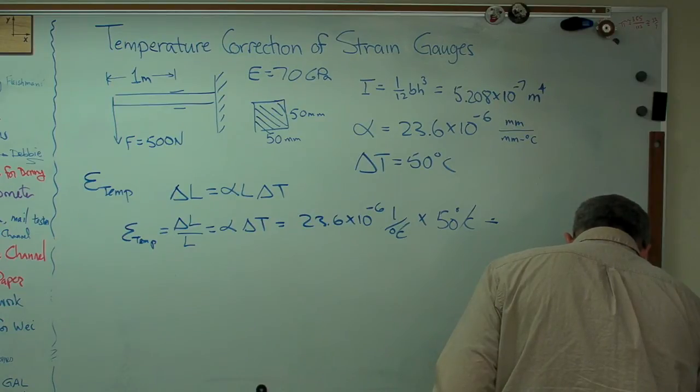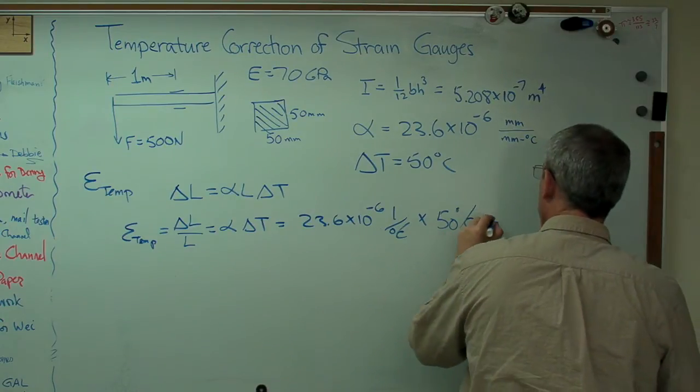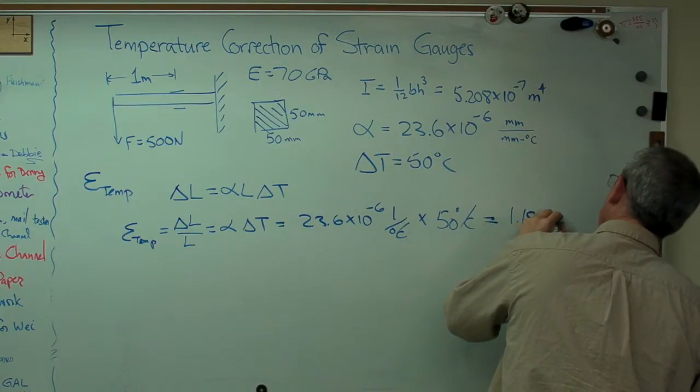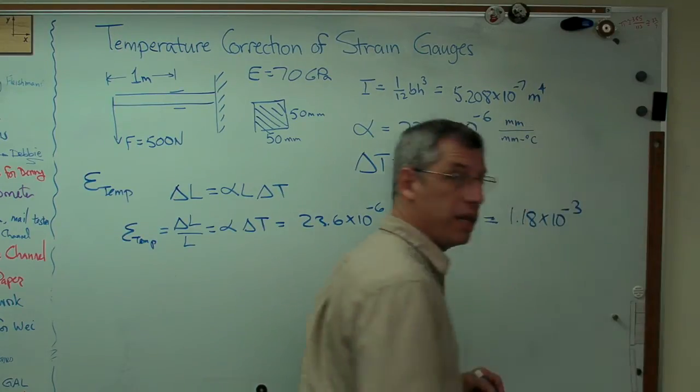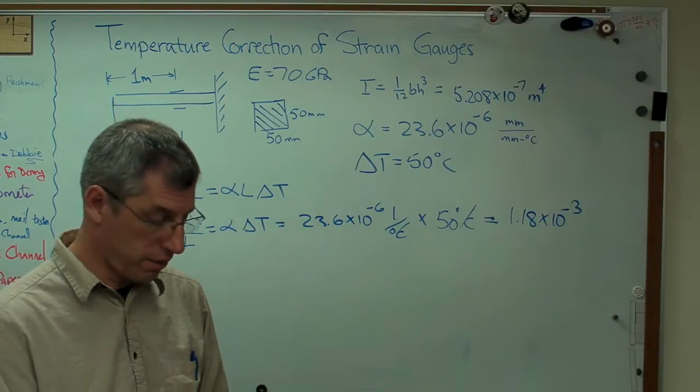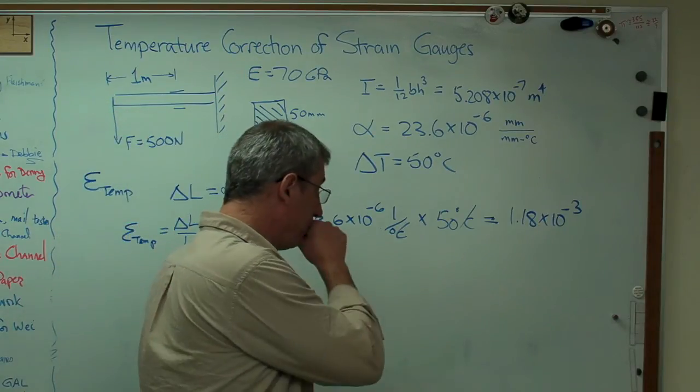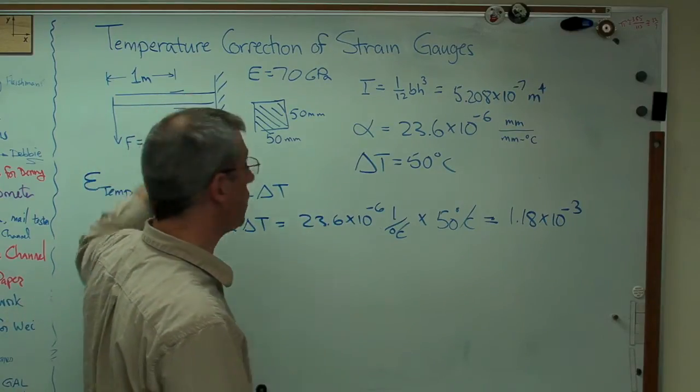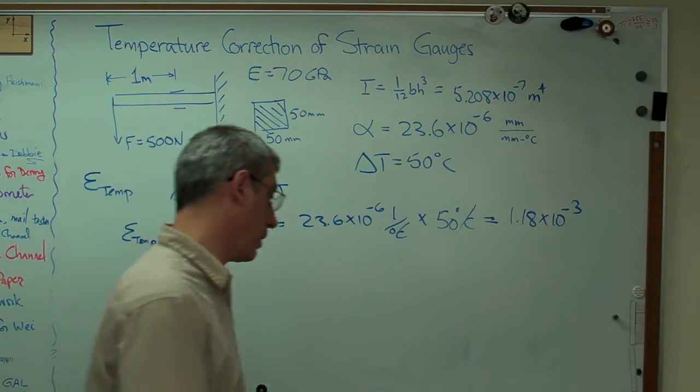And I'm going to get this little tiny number. 1.18 times 10 to the minus 3rd. So that's really not very much, fairly low strain. But it's not zero. Your strain gauges are going to know that's there. These two gauges will see that.